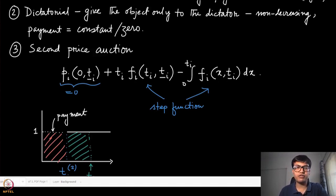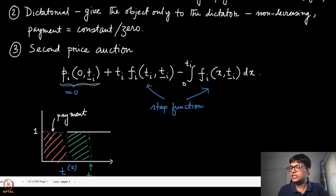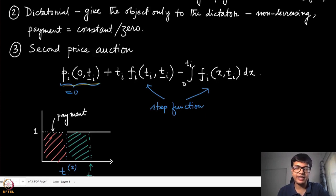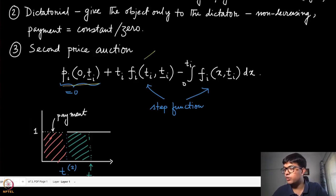Let us look at the payment formula in this case. The first part is assumed to be equal to 0. The second price auction is a deterministic allocation — we give the object to the highest valued agent. If that agent is the highest valued, it gets the object with probability 1, all other agents get it with probability 0, and it pays the second highest bid.